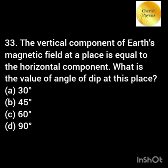The vertical component of Earth's magnetic field at a place is equal to the horizontal component. What is the value of the angle of dip at this place?